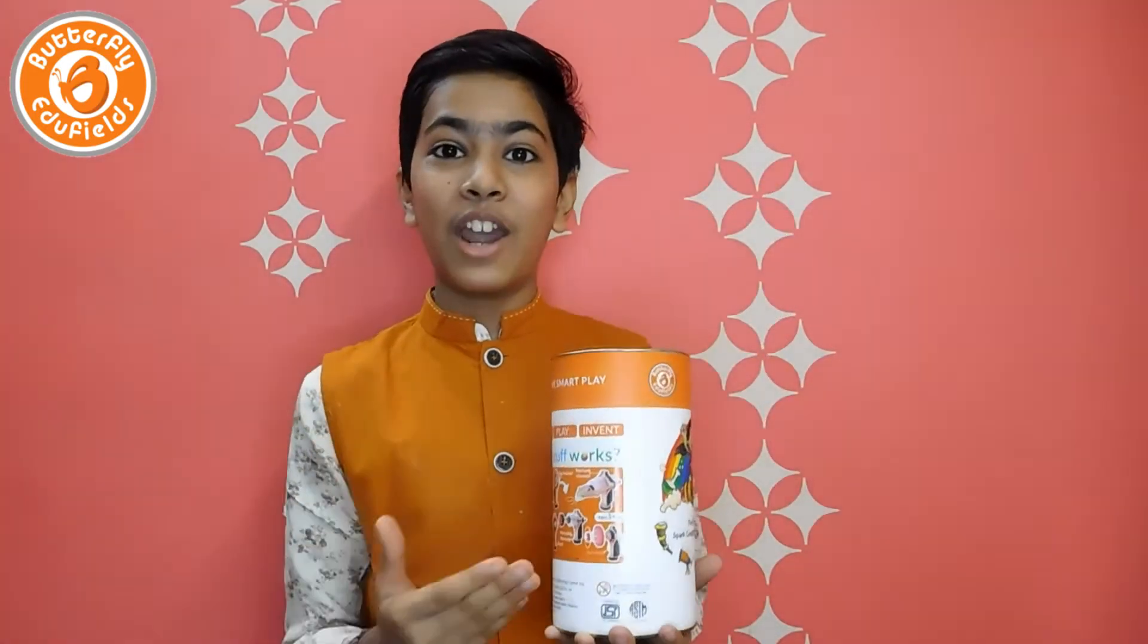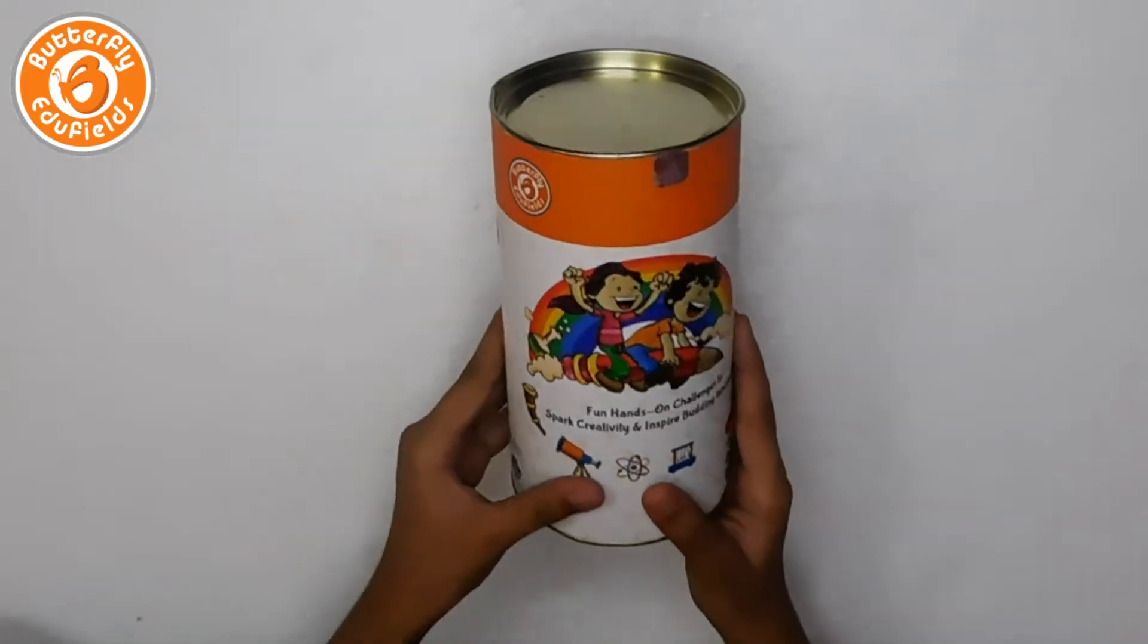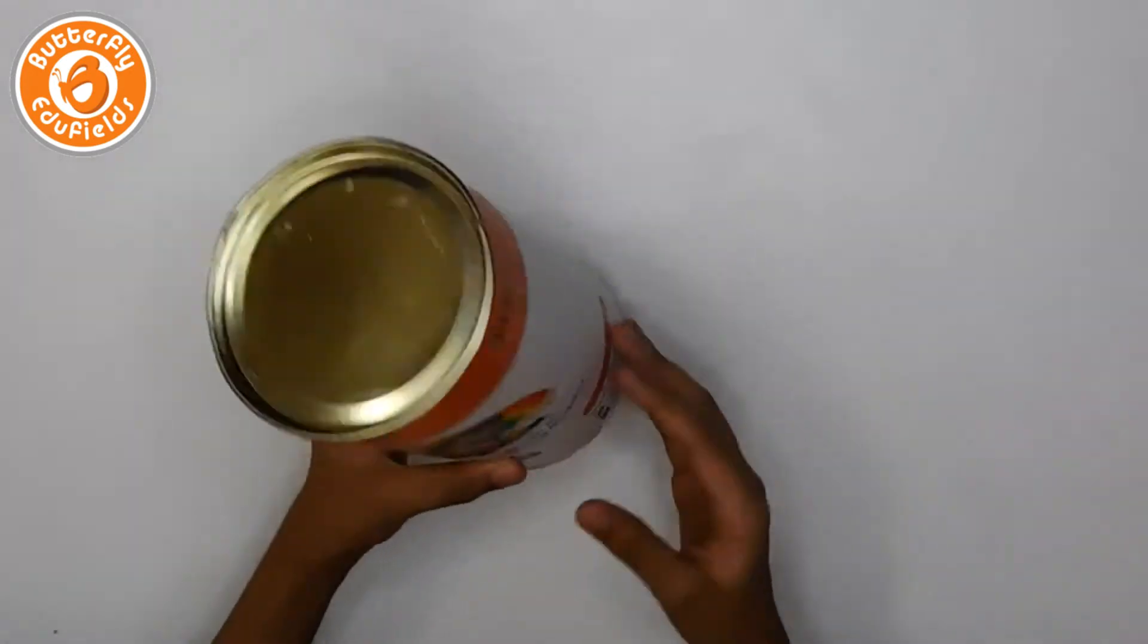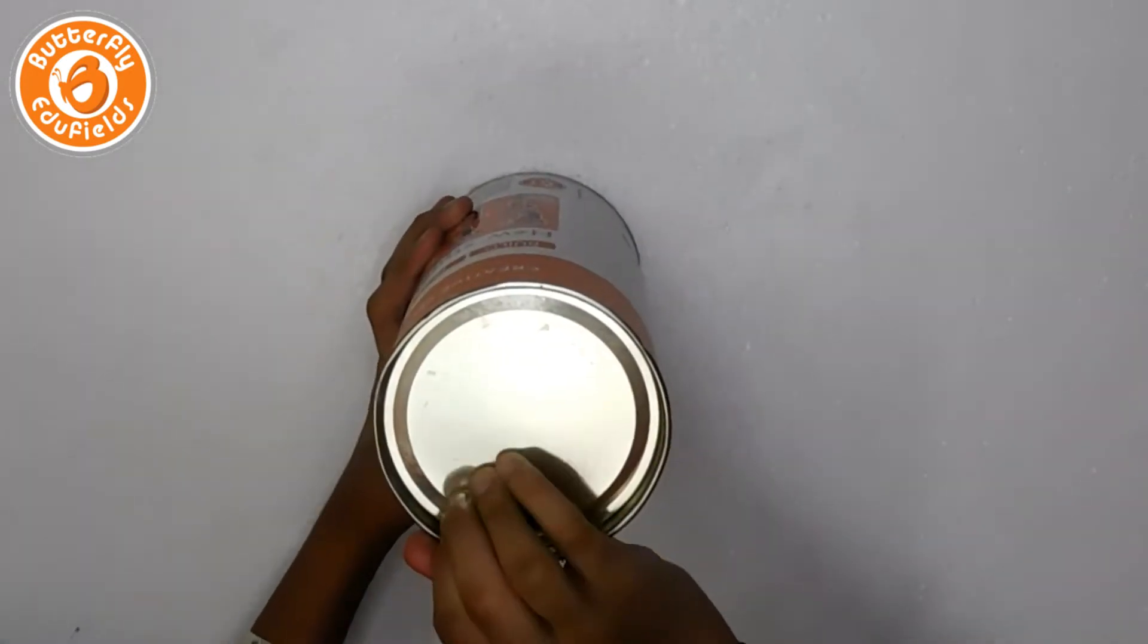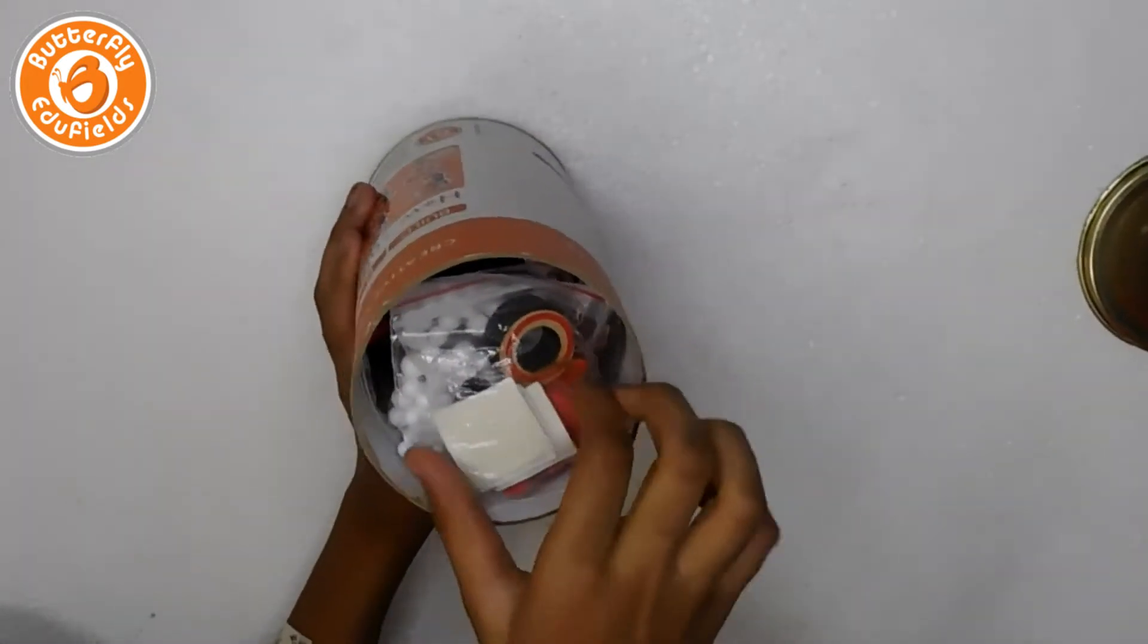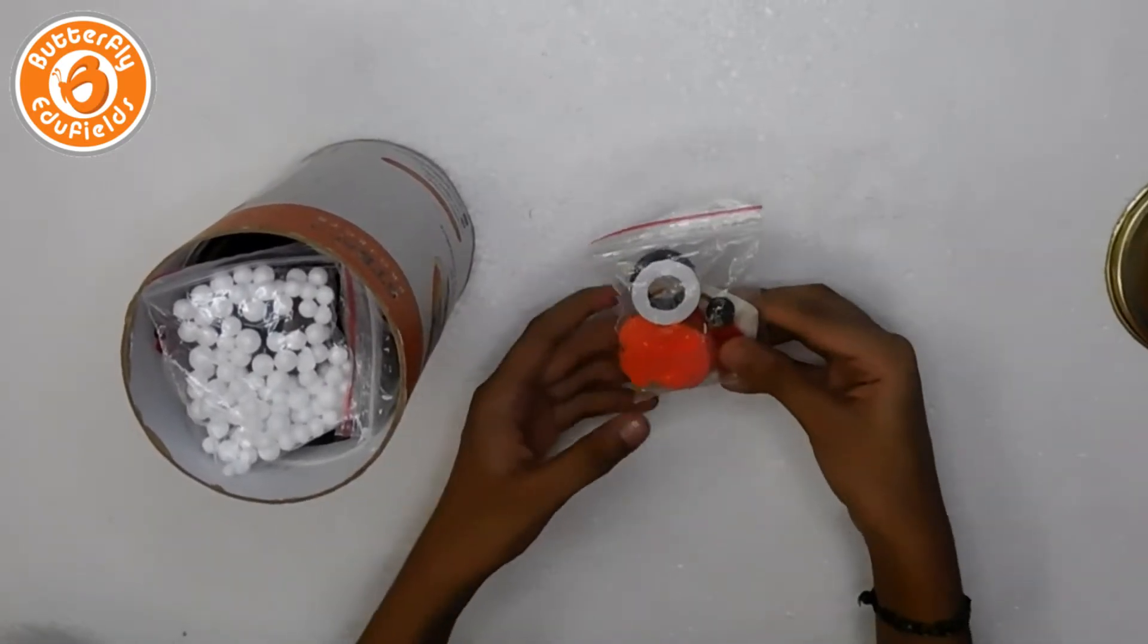This is the Butterfly Edu Feels How Stuff Works kit. There are many items in this, and you can make seven plus projects and learn how stuff works at your home. The project kit is in the form of a cylinder, so now let's open it.